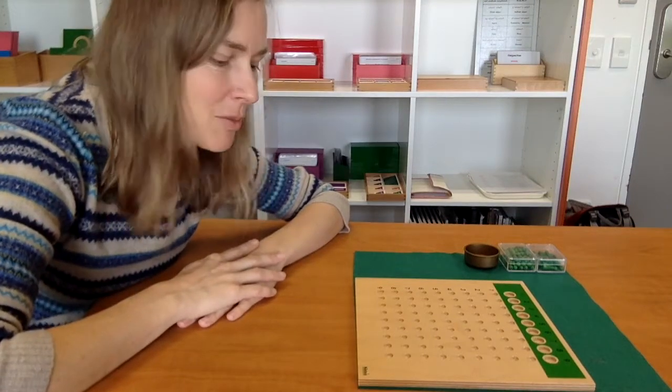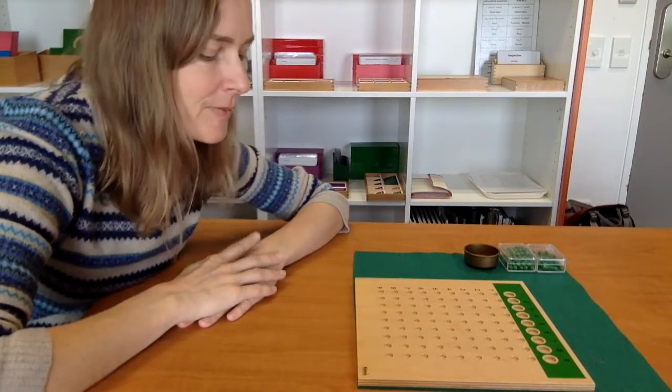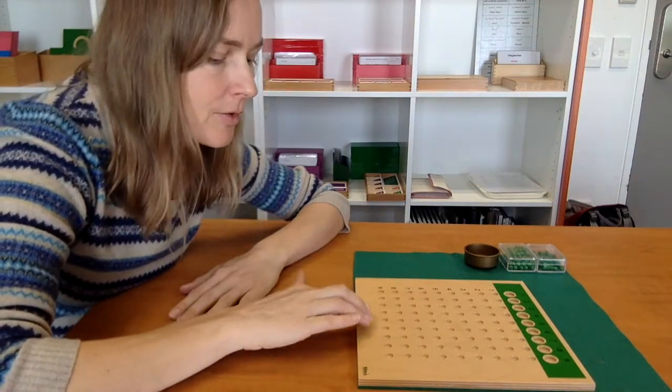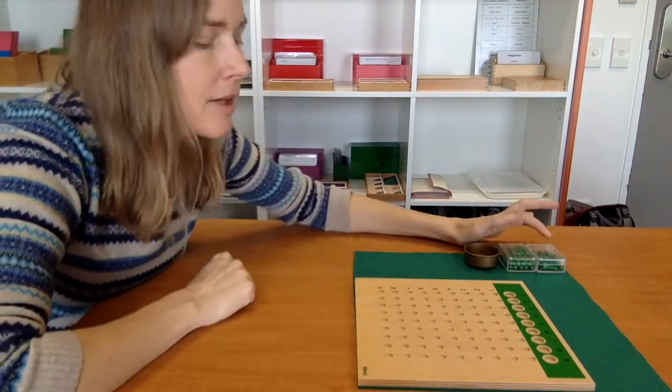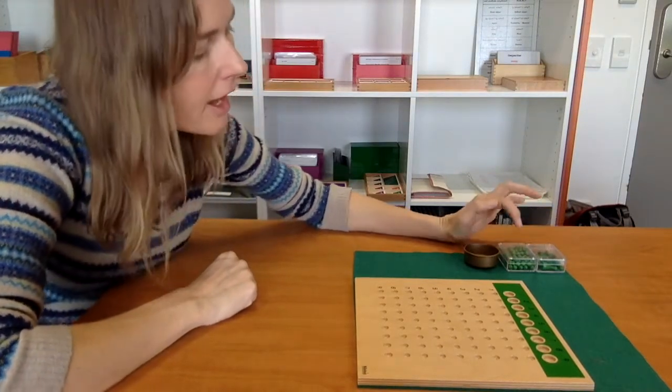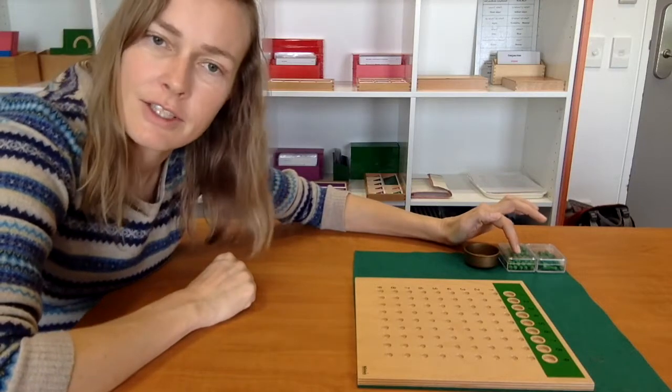Hello, today we'll be looking at the division board. The material is made up of the division board, the skidlets which are the divisor, and the units which are the dividend.